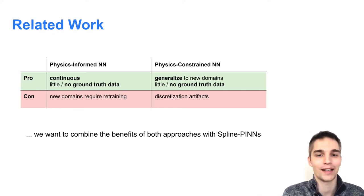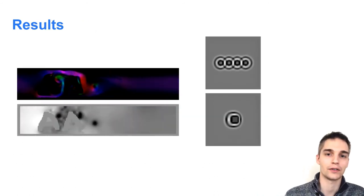First, physics-informed, and second, physics-constrained approaches. Our Spline-PINN method allows for fast continuous simulations that generalize to new domains and don't require any ground truth data for training.